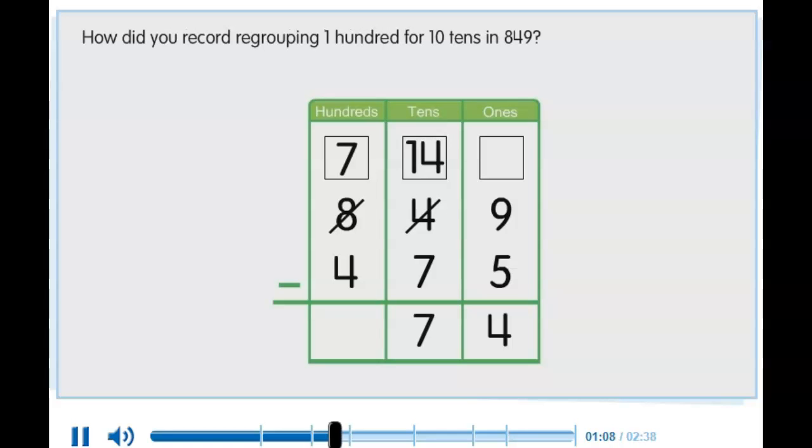How did you record regrouping 100 for 10 tens in 849? You crossed out 8 and recorded 7 in the box in the hundreds column.